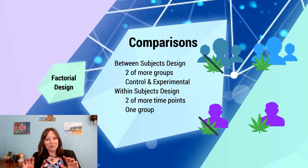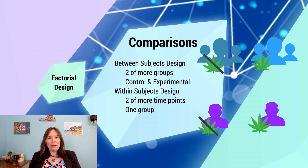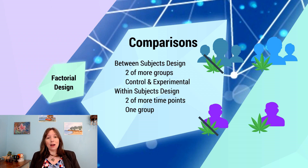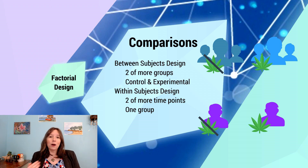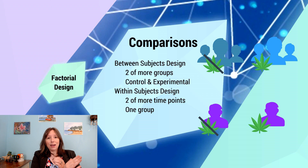You may have noticed some holes in the within-subjects design. If we're getting people to drive once and then drive again, there may be an opportunity to learn or improve driving skill. So it's important to control for ordering effects. Some participants will drive first under the influence of cannabis then sober up and drive again, while others will drive sober first and then under the influence of cannabis.